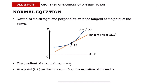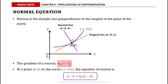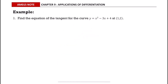The normal is the straight line perpendicular to the tangent at the point of the curve. The gradient of the normal is denoted as m sub n, where it equals negative 1 over m. The equation of normal is given by y minus k equals m sub n multiplied by x minus h, where m sub n is the gradient of the normal and (h, k) is the point.